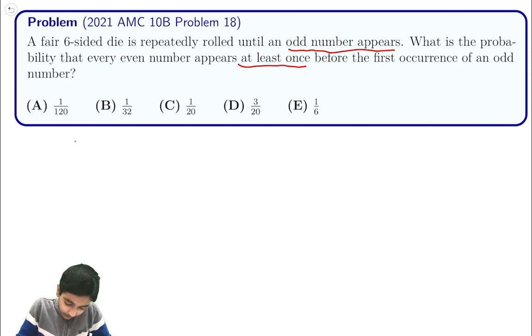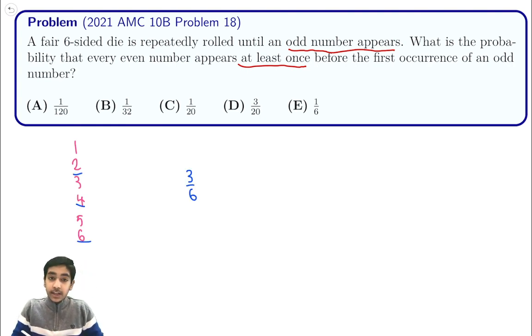So on the first roll we have six possibilities: 1, 2, 3, 4, 5, 6. Out of these six possibilities, three out of six of them, 2, 4, and 6, will result in you rolling a unique even number. If you roll an odd number then it doesn't count, so we throw out those possibilities. There's a 3/6 chance of rolling an even number on your first roll.